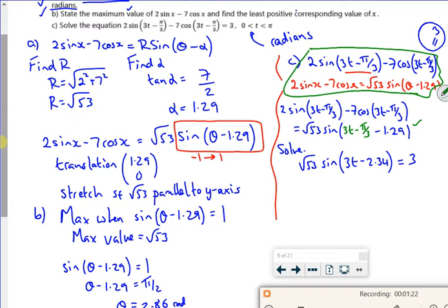So it said that my root 53 sine θ minus 1.29. My theta is really 3t minus π/3. So that's quite a tough one to get your head around. But then what I wanted to do for this bottom line here, where I've got to solve it equal to 3.